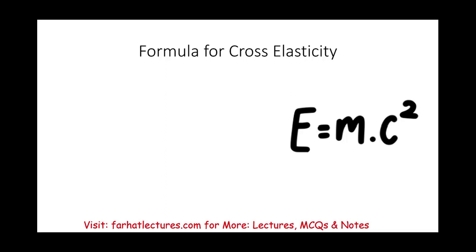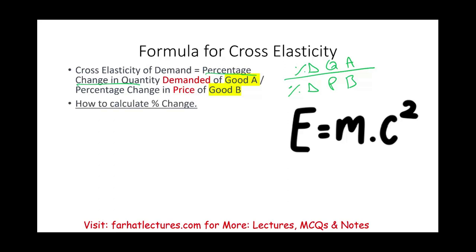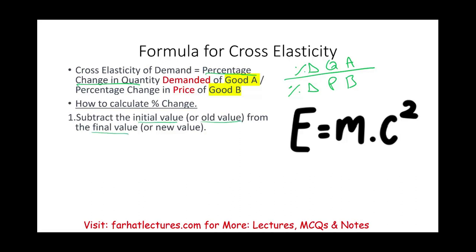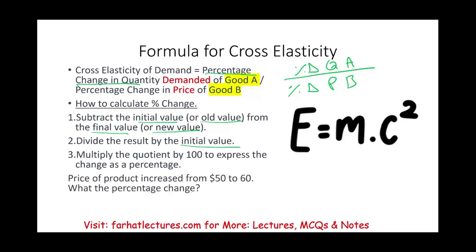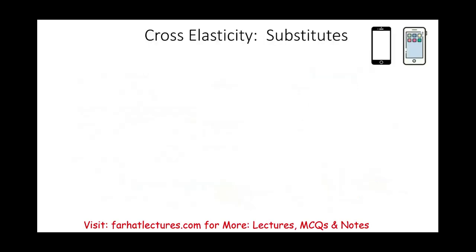Starting with the formula for cross-elasticity: it's the percentage change in quantity of product A divided by the percentage change in price of product B. To compute the percentage change, subtract the initial value from the final value, divide by the initial value, then multiply by 100. For example, a change from 50 to 60 gives a difference of 10; 10 divided by 50 equals 20%. A change from 60 to 50 — also $10 difference — but divided by the initial value of 60 gives 16.67%. Be careful about this.